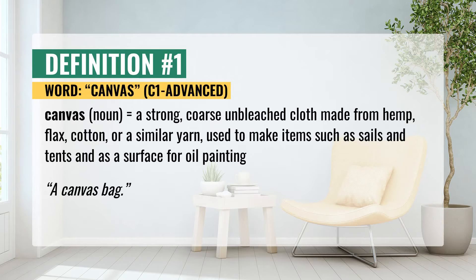The first definition of canvas. A strong, coarse, unbleached cloth made from hemp, flax, cotton, or a similar yarn, used to make items such as sails and tents and as a surface for oil painting. For example, a canvas bag.